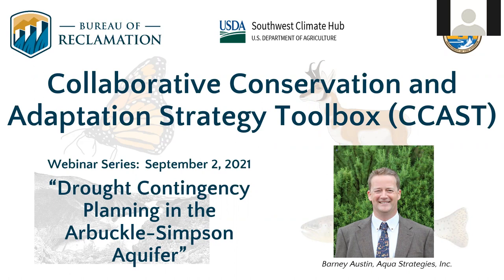Barney Austin is the president and CEO of AquaStrategies, a water resources engineering firm based out of Austin, Texas. He has worked on water resources planning issues in Texas and Oklahoma for over 20 years, and was the former director of the Surface Water Resources Division of the Texas Water Development Board until 2009. He also consults for the Choctaw and Chickasaw Nations and is an adjunct professor at East Central and Oklahoma State Universities. If you have questions during the presentation, please enter them in the chat box.